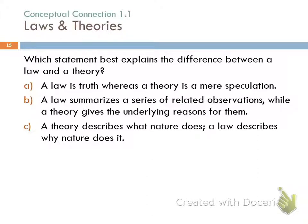Which statement best explains the difference between a law and a theory? A: a law is truth, whereas a theory is mere speculation. B: a law summarizes a series of related observations, while a theory gives the underlying reasons for them. C: a theory describes what nature does, a law describes why nature does it. The correct answer is B. The law says what happens; the theory gives the reasons why.